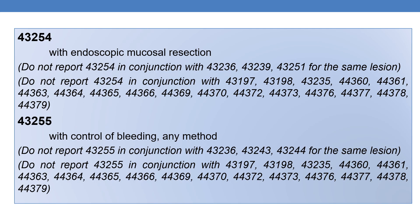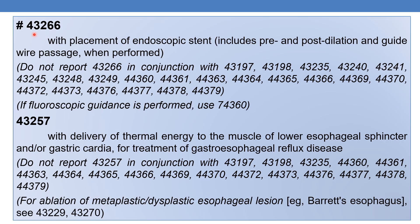The next CPT is 43254: esophagogastroduodenoscopy, flexible, transoral, with endoscopic mucosal dissection. The next is 43255: esophagogastroduodenoscopy, flexible, transoral, with control of bleeding, any method. The next is 43266: esophagogastroduodenoscopy, flexible, transoral, with placement of endoscopic stent. It includes pre- and post-dilation and guide wire passage when performed. If fluoroscopic guidance is performed, use 74360.